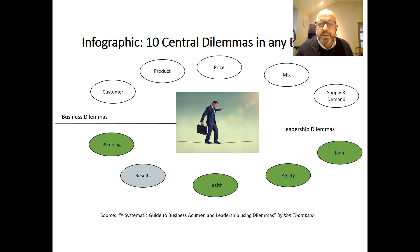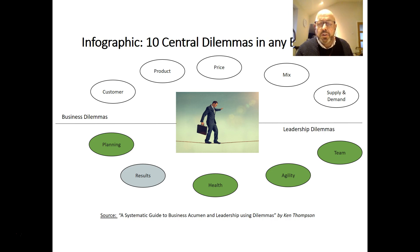Finally, the fifth business dilemma I call the supply and demand dilemma. You really have to balance these — for example, you don't want too much supply because that will exceed your demand and you'll have extra costs. If you have too little supply, then you can't meet your customer demand and that will damage your loyalty. In all of these dilemmas you're looking for the optimum position, which will constantly change.